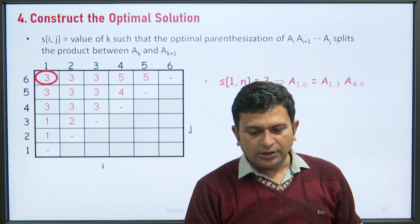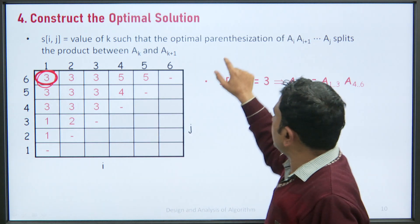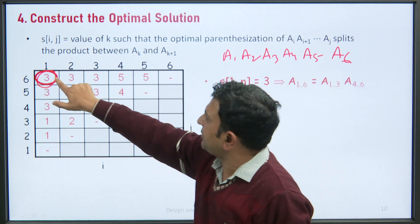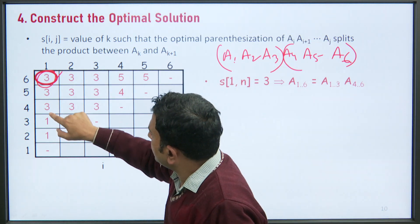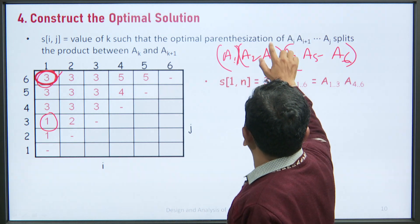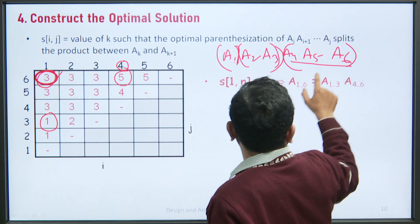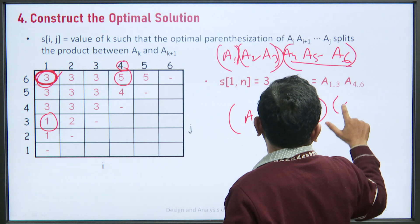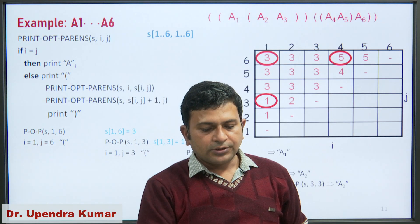In another example with 6 matrices A1 through A6, the S[1][6] value is 3, so we break at A3 giving sub-problems A1..A3 and A4..A6. For A1..A3, S[1][3]=1, meaning we break at position 1, so A2 and A3 are multiplied first. For A4..A6, S[4][6]=5, meaning we break at position 5, so A5 and A6 are multiplied first. This gives us the optimal parenthesization for minimum scalar multiplications. This concludes the lecture on matrix chain multiplication using dynamic programming. Thank you very much.